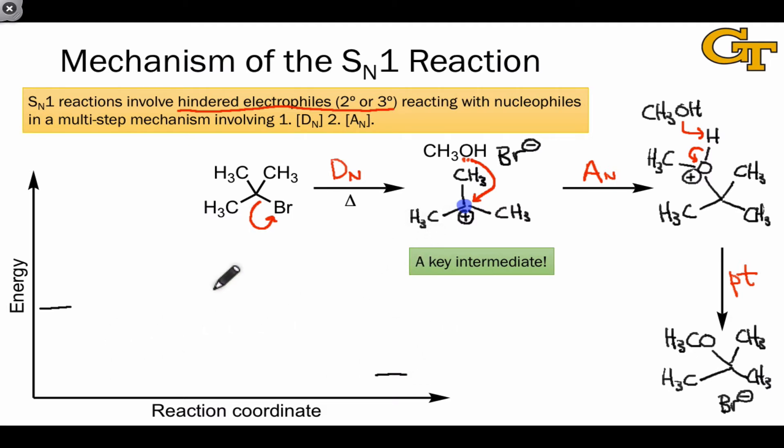The slowest step of the SN1 reaction is the first step. This is always uphill in energy, or endothermic or endergonic, because it's pure bond cleavage. Bromine is departing with a pair of electrons and nothing else is happening, and so the transition state of this step is at a higher energy than any of the others.